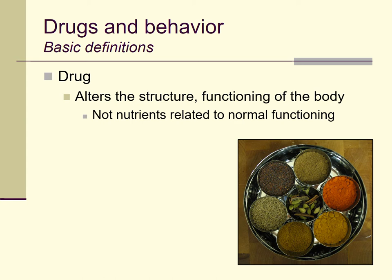The first thing is: what is a drug? For our purposes, a drug is going to be considered anything that alters the structure or functioning of the body, especially the nervous system. Drugs are substances that have these effects but are not nutrients necessary for normal functioning. Anything you eat likely alters your body's functioning, but food and beverages are not considered drugs because you need that nutrition to survive.